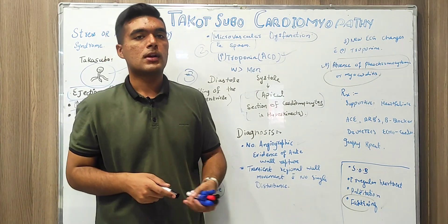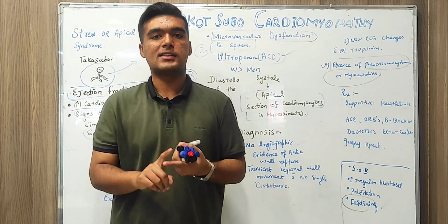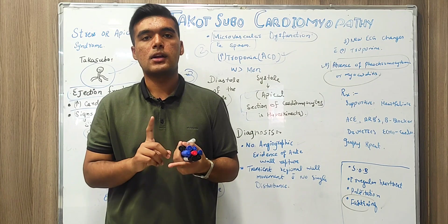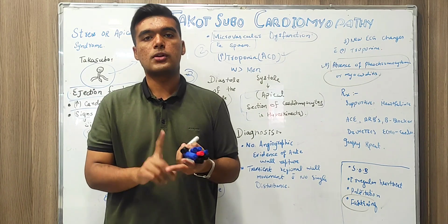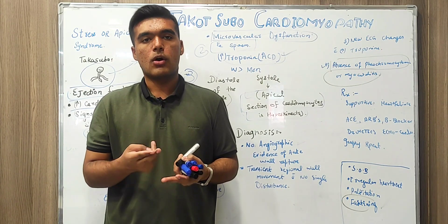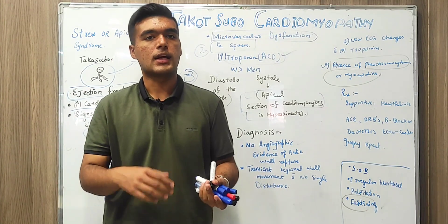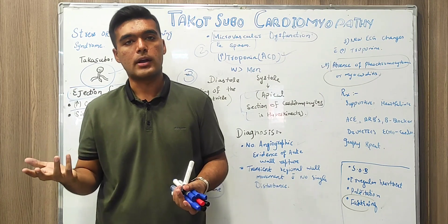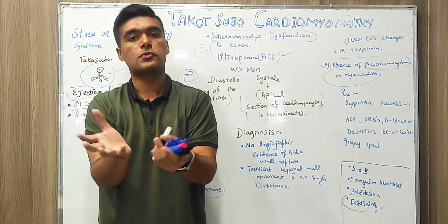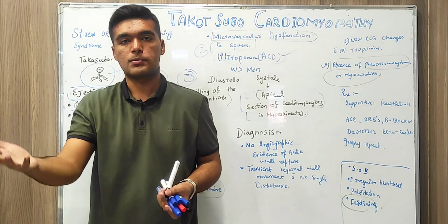If you take names, we will use valsartan, telmisartan, irbesartan and we will use salmeterol, formoterol, albuterol or we will use in case of diuretics, loop diuretics or thiazide diuretics, hydrochlorothiazide or furosemide. It depends upon the condition of the patient, we will devise a treatment.